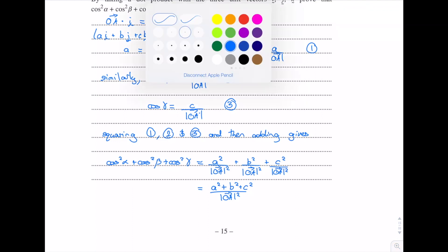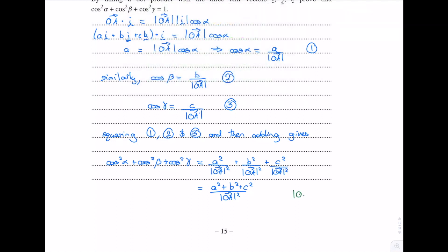The length of OA is the square root of a squared plus b squared plus c squared, so the length of OA squared is just a squared plus b squared plus c squared. The fraction therefore becomes a squared plus b squared plus c squared divided by a squared plus b squared plus c squared, which equals 1. That is the final answer.